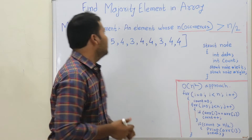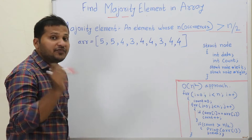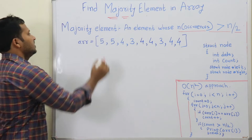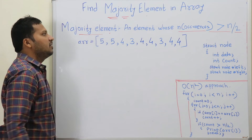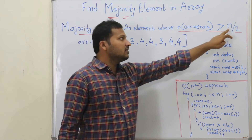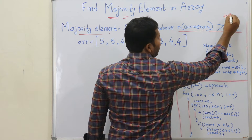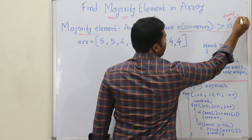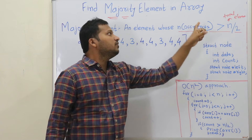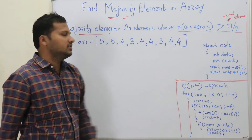Today we are going to see how to find the majority element in an array. At first we will see what majority means. An element whose number of occurrences is greater than n/2, where n is the total number of elements in the array — meaning half of the occurrences.